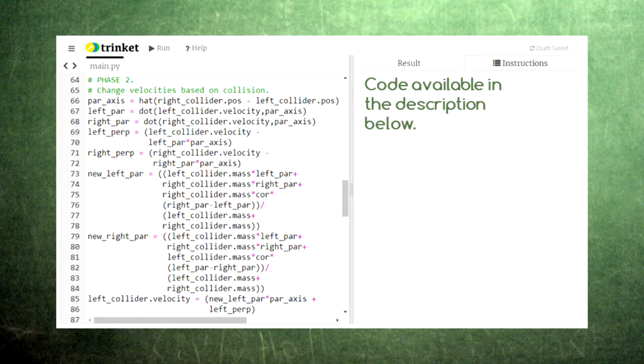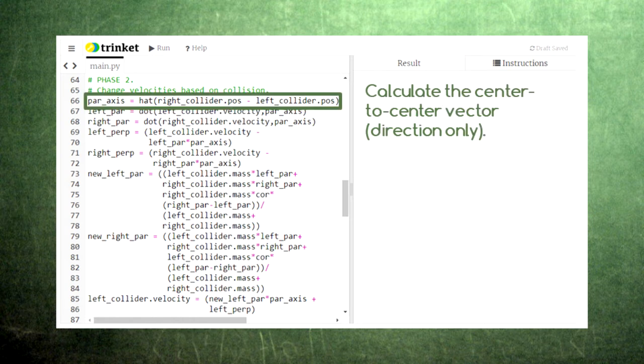In phase two, the momentum exchange is calculated. First, we calculate the center-to-center vector between the two colliders. We're using vpython's hat function here since we only need the direction of this vector, not the magnitude.